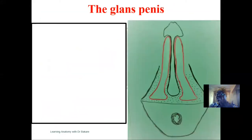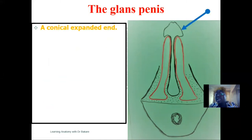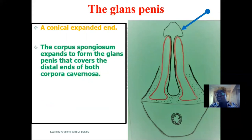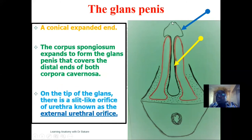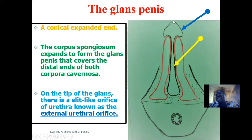The glans penis is the conical expanded head of the penis. It is made up of the terminal portion of the corpus spongiosum, which expands distally to form the glans. At the tip of the glans penis is an indentation called the external urethral orifice — the external limit of the penile urethra, where the urethra finally terminates and emits its contents to the outside.